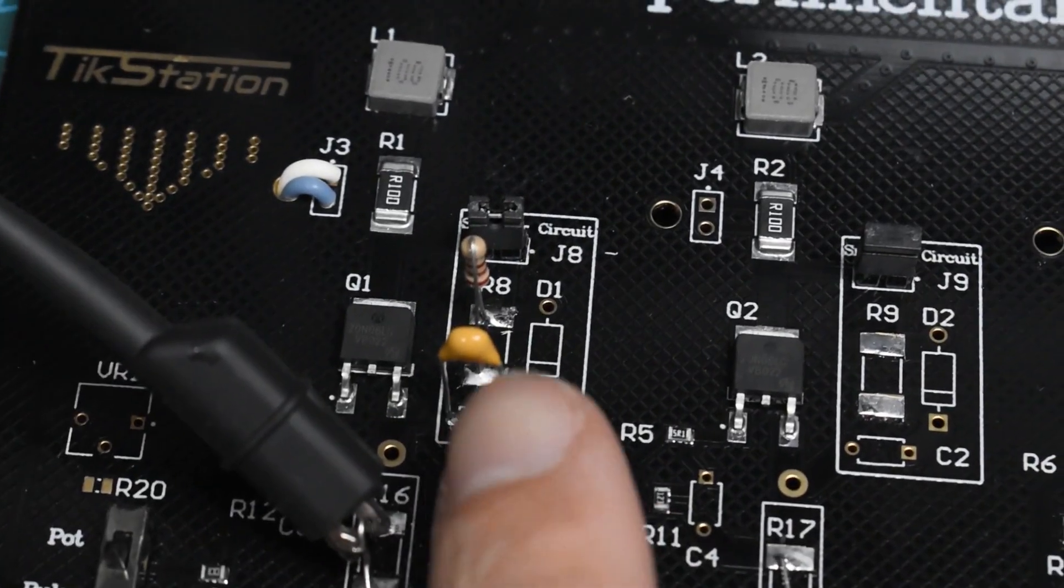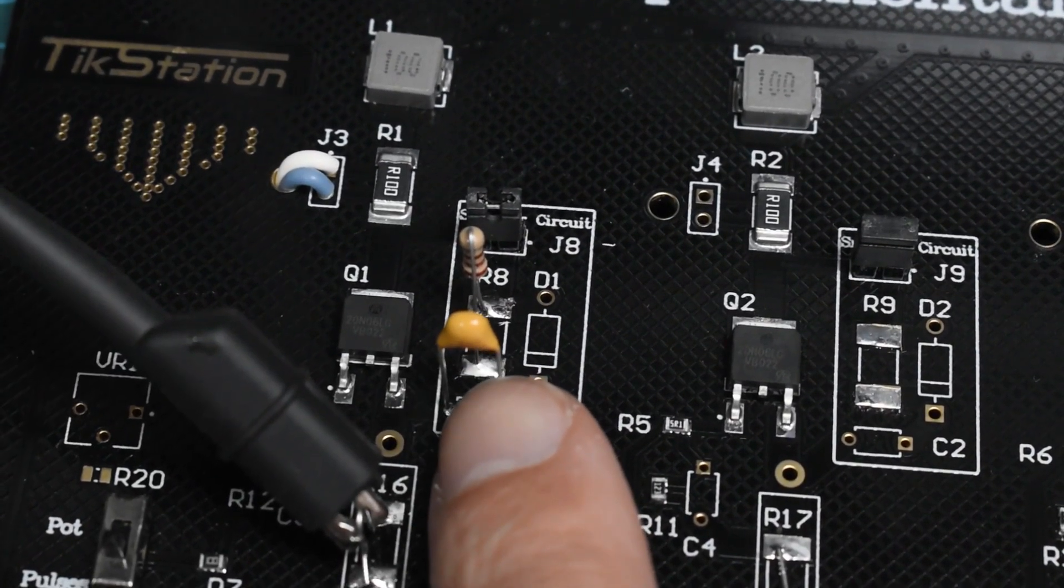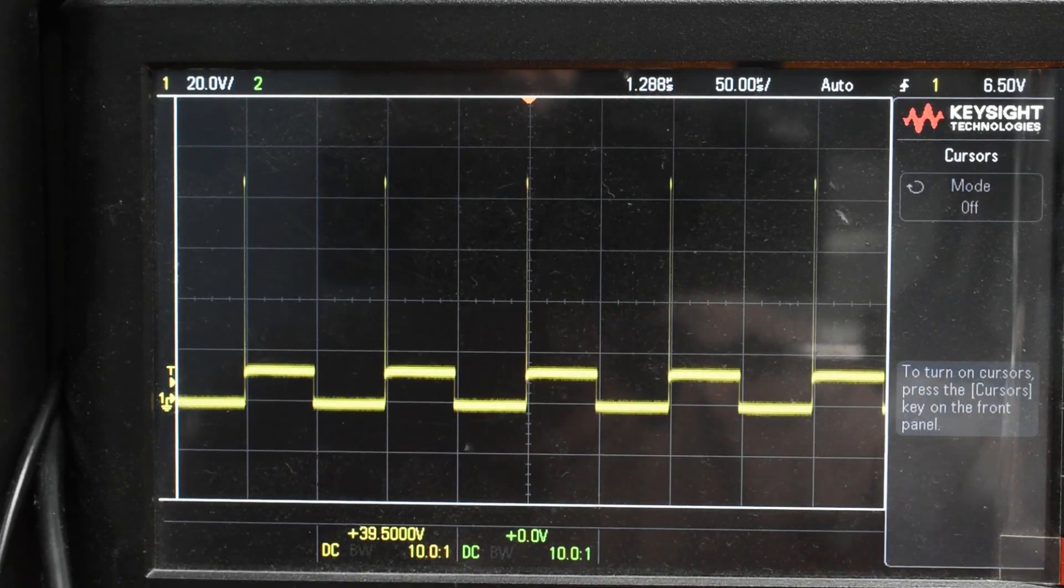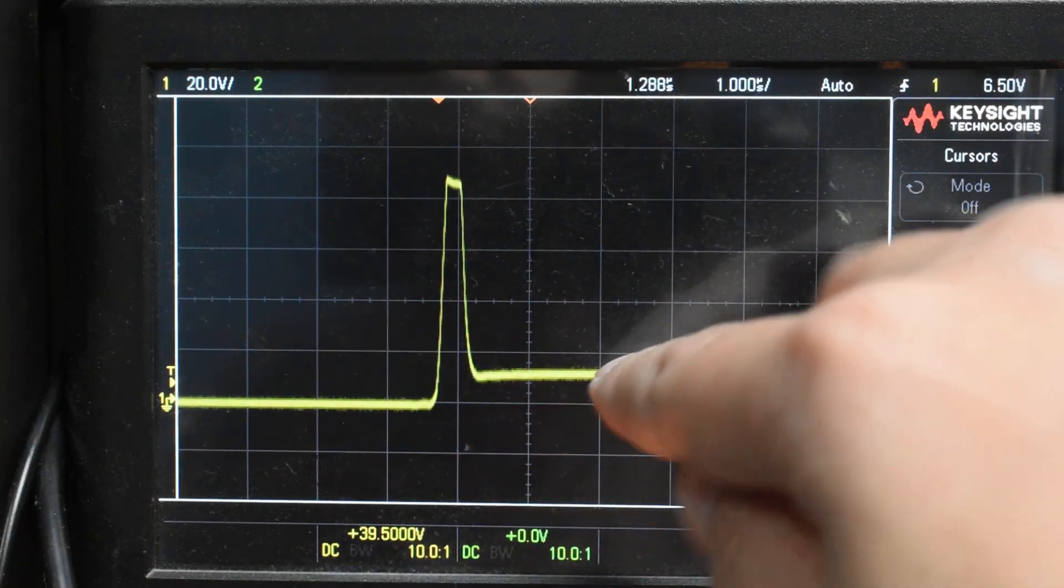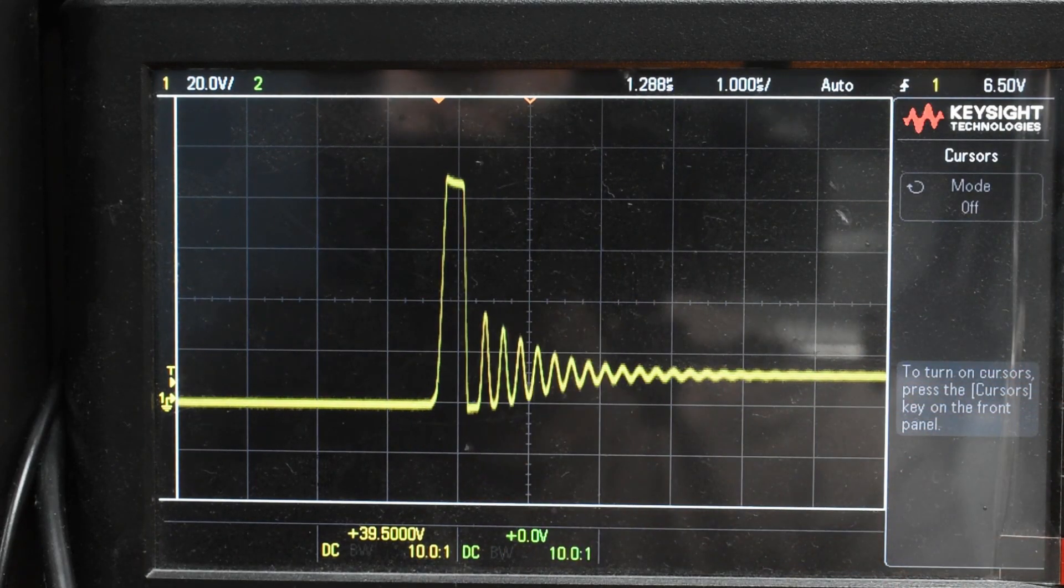Let's start with 2.2 nF as snubber capacity which is multiple of the 470 pF and resistance of 220 ohms. We can engage the snubber by this jumper. The waveform shows that the spike is still very high but the resonance has disappeared and dampened completely. This is how it looks with and without the snubber.